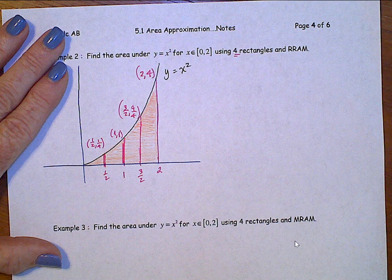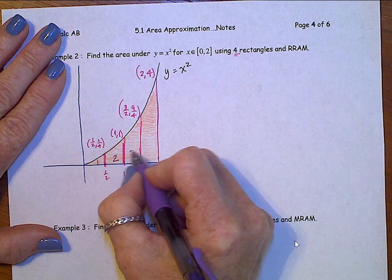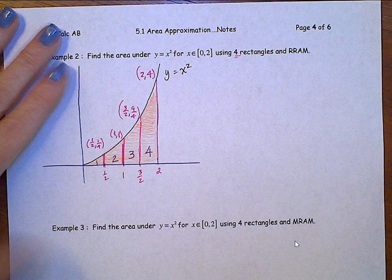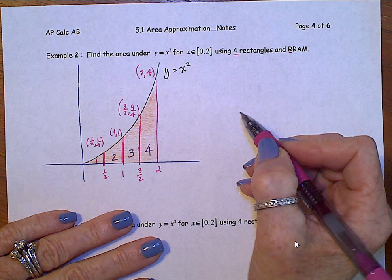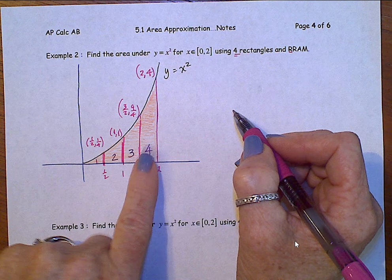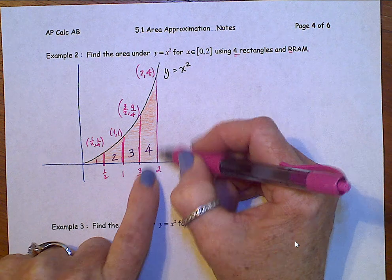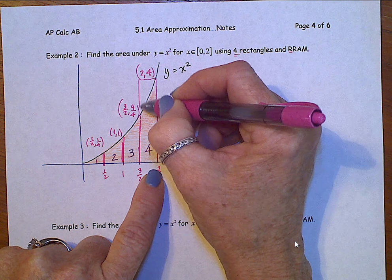Alright, our sections. Still, first section, second, third, and fourth. But this time, when we draw our rectangles, we want to use RRAM, which is right side heights. So if we look at this fourth section, the right side is this side that comes off of the 2. That determines the height of the fourth rectangle.